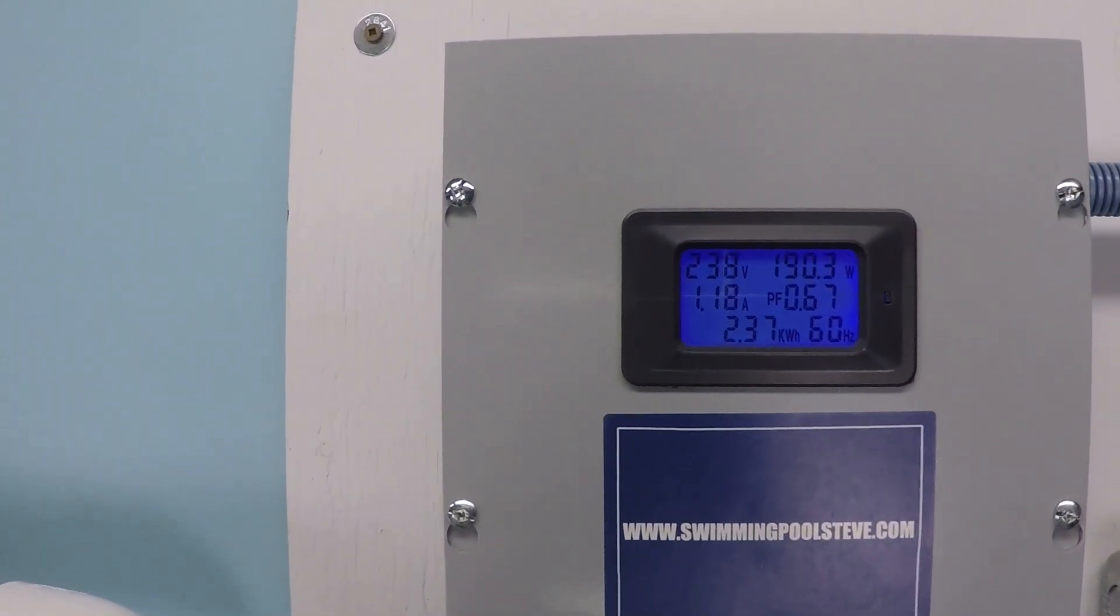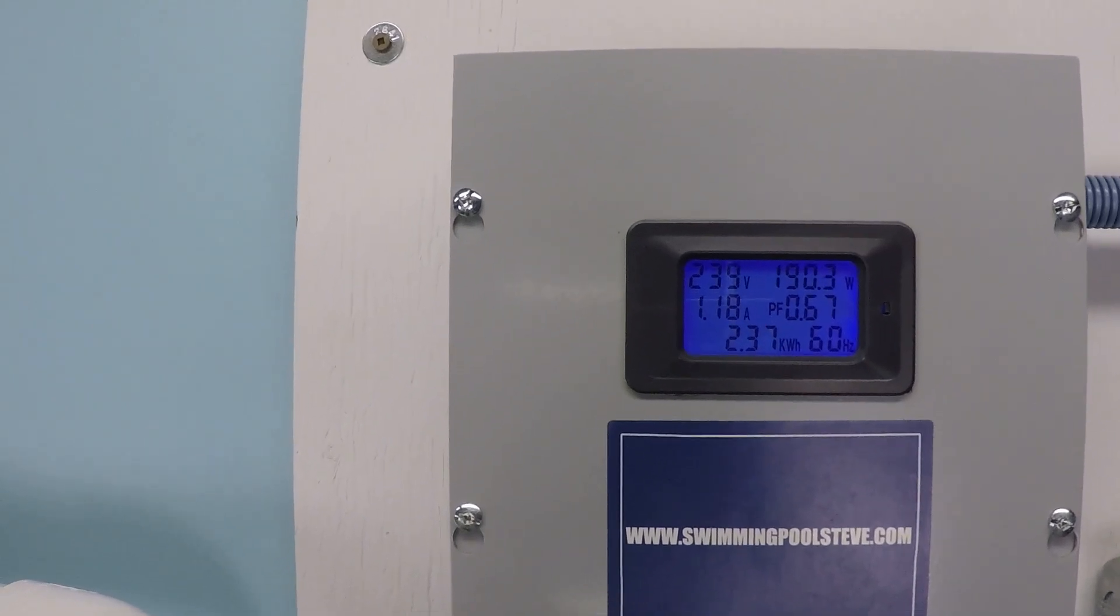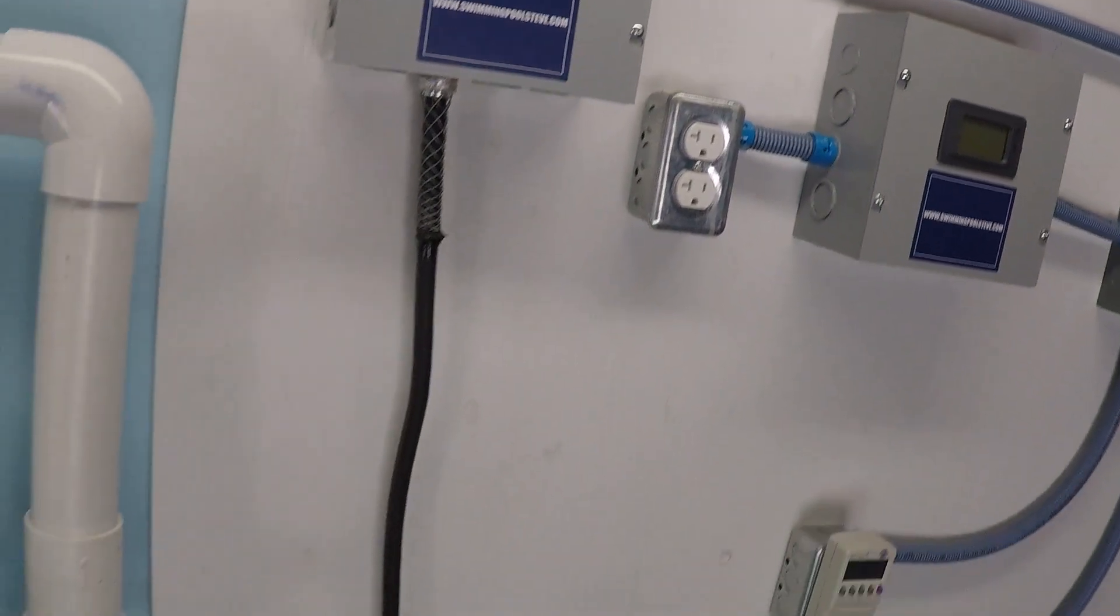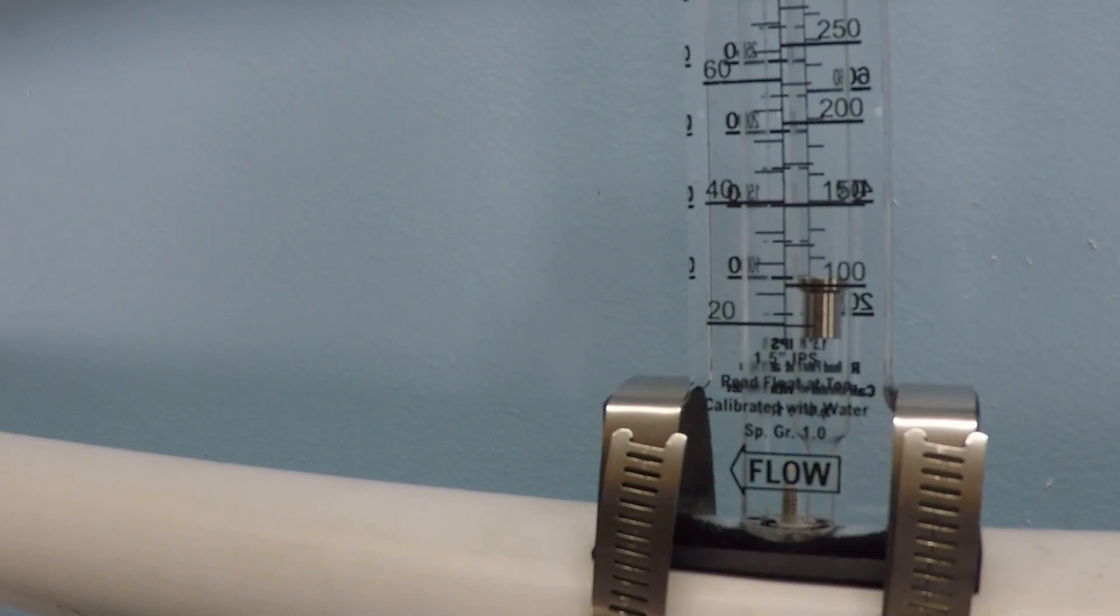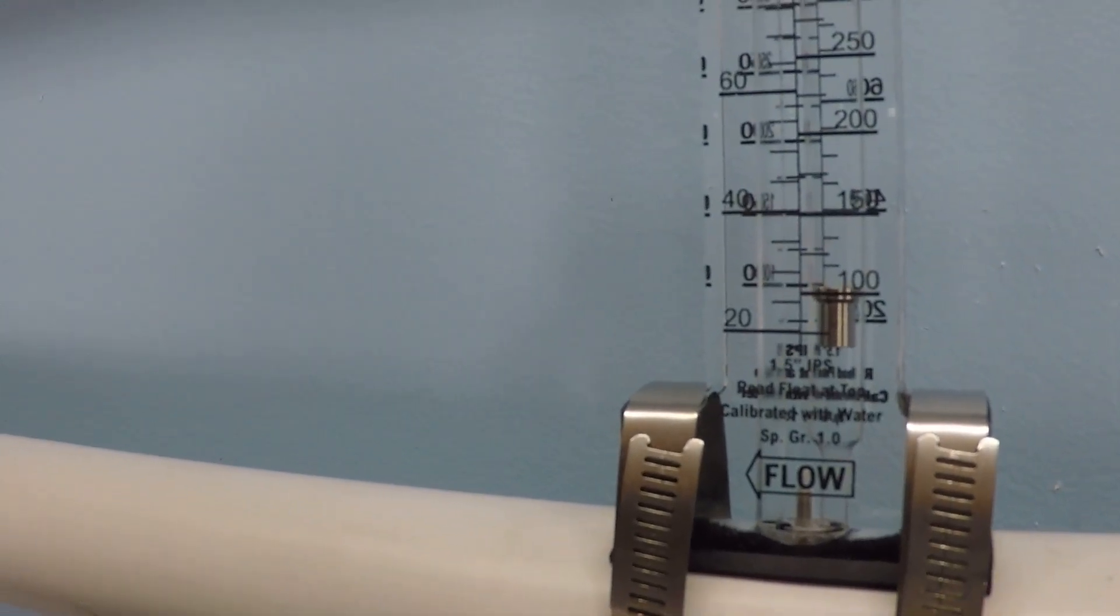Up to 1.18 amps, 190 watts. Over on our high range flow meter we can see about 27 gallons per minute.